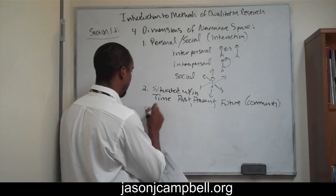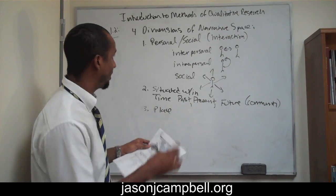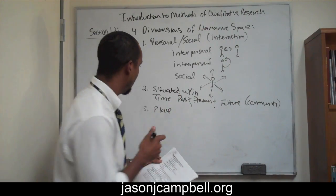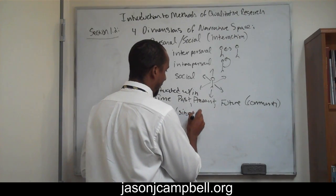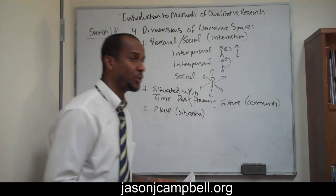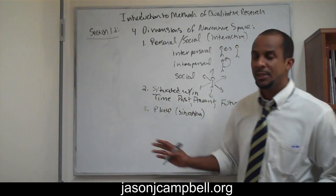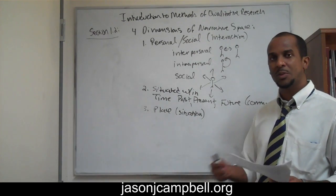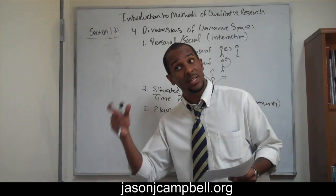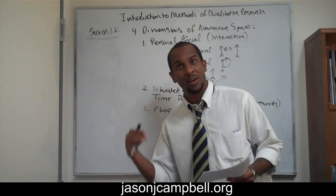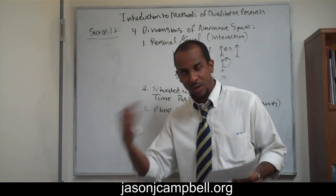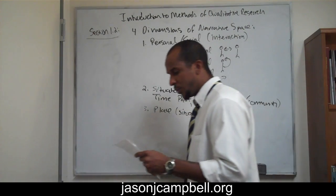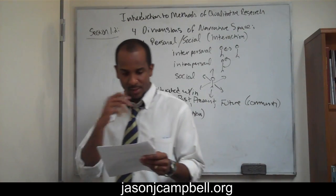Number three: place. It's called narrative space, so you can't really do narrative space without addressing place. Place is obviously going to be situational — I lived in this place for this amount of time, here's what I experienced, then I moved; or I've lived in this place my entire life and here's the significance of that. Environmental influences on the narrative — that's sort of obvious.